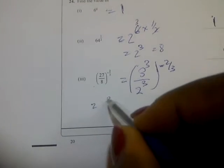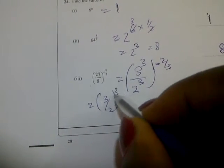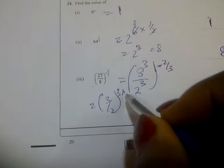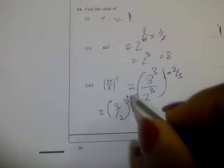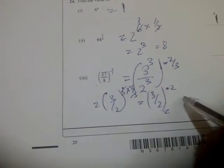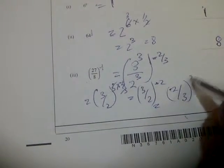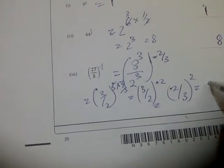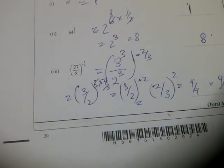That gives you 3 over 2 raised to the power 3 times negative 2 over 3. The 3s cancel, giving you 3 over 2 raised to the power negative 2, which equals 2 over 3 raised to the power 2, which gives you 4 over 9. So the answer is 4 over 9.